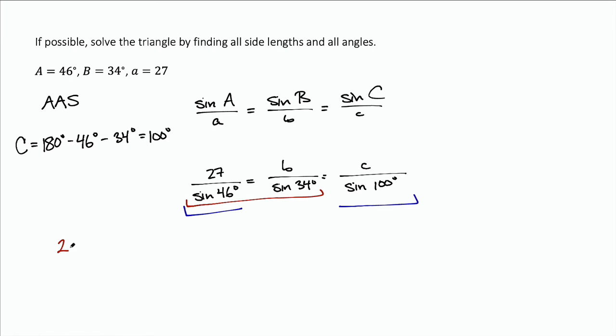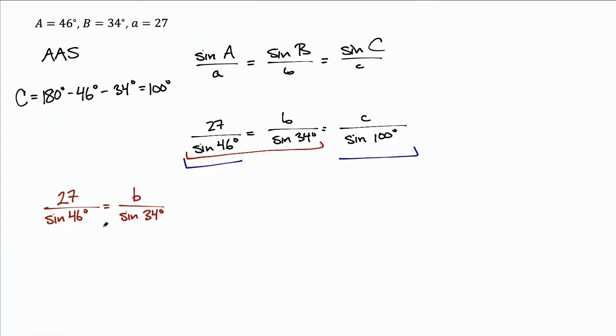27 over sine of 46 degrees equals b over sine of 34 degrees. And if I multiply both sides by sine of 34 degrees, I get 27 sine of 34 degrees over sine of 46 degrees equals b.